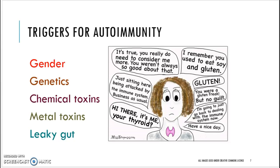There are many factors implicated as triggers causing the immune system to no longer distinguish between foreign and self, though nothing has been proven with 100% certainty. Gender is one factor: according to the American Thyroid Association, more than 12% of Americans will develop a thyroid condition in their lifetime, and an estimated 20 million Americans have some form of thyroid disease, with women five to eight times more likely than men to have thyroid problems. Genetics is another factor — autoimmune disease runs in families, and if a family member has an autoimmune disorder, there is a higher chance you may develop one, though it may not be the exact same one. Chastayakov has discussed this at length in his article 'Immunogenetics of Hashimoto's Thyroiditis.'